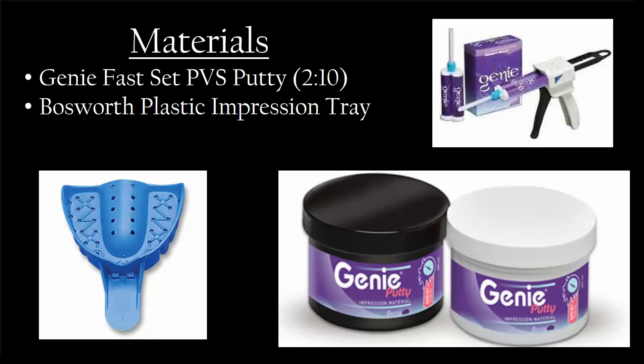The materials I used were Genie Fast Set Putty — a PVS putty that sets in two minutes and ten seconds — and the Bosworth plastic impression tray, though you could probably use any plastic impression tray. The idea is you want the impression tray to show up radiolucent. One important thing: when you do this PVS impression, make sure you don't press so hard that the teeth are actually touching the tray. You don't want any bleed-through if you can help it.